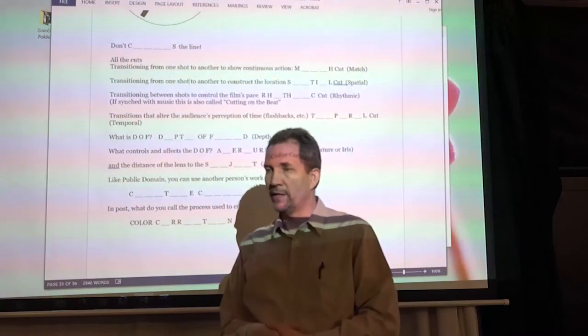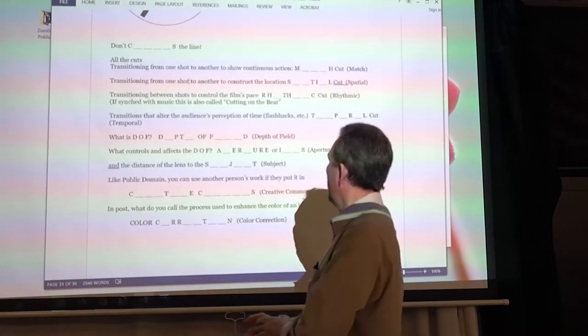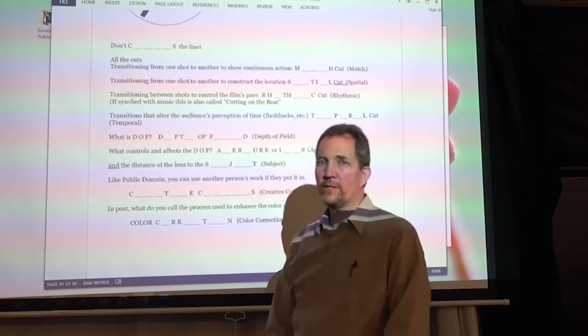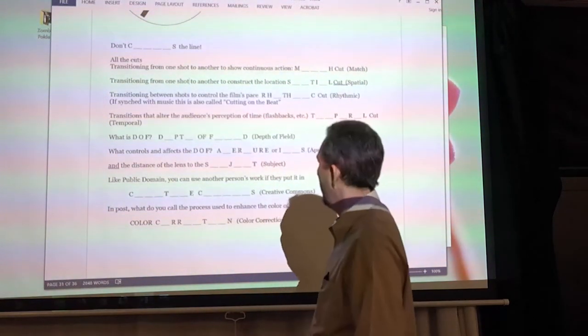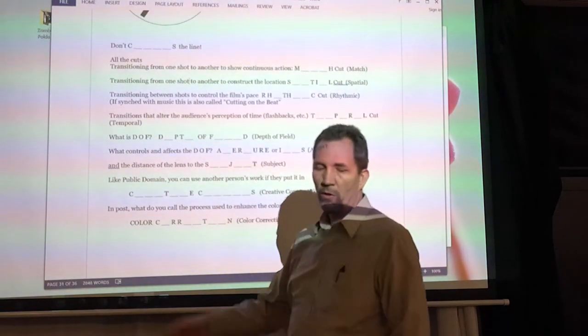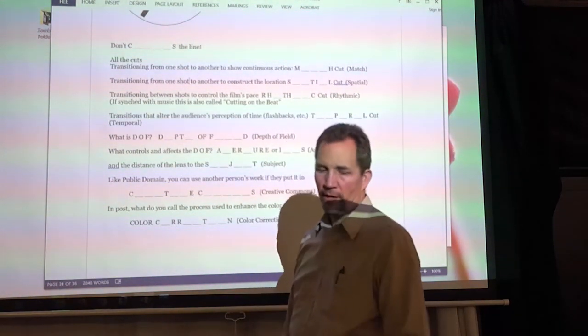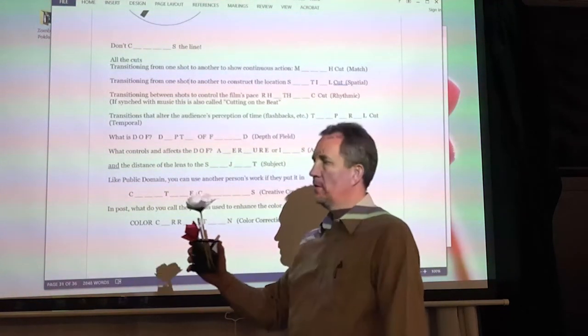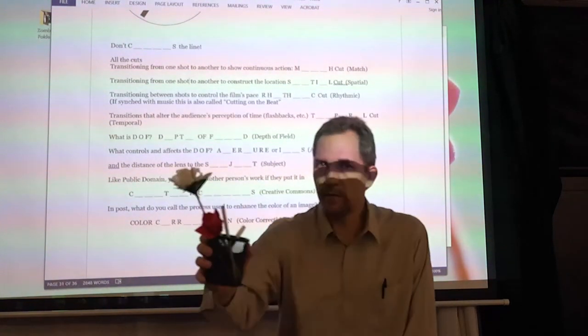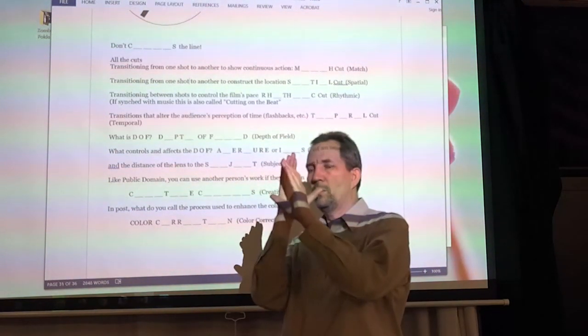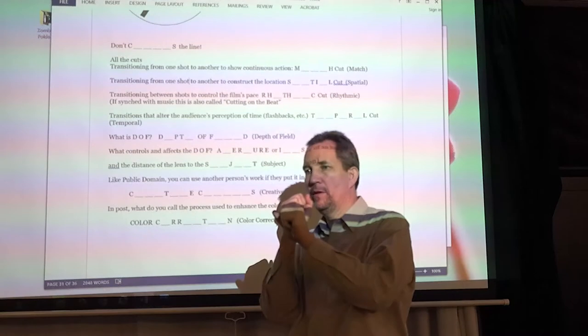And you can stop that all the way down and let very little light into the camera, or you can open it up larger. But in still photography, guess what we usually call it? Aperture. I don't know what they call it on the state test, so I use both. And if you've had my photography class, you're used to calling it aperture. But get used to calling it iris because now you're on motion video cameras.